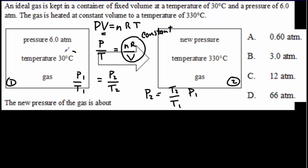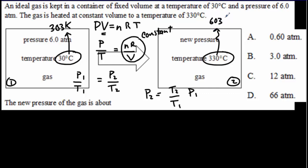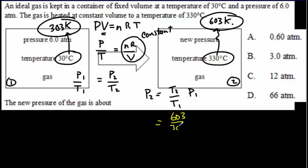We have to be careful here. In Celsius the temperature went up by a factor of 11, from 30 to 330, but in Kelvin it didn't go up by nearly that factor, so we've got to convert to Kelvin. 30 degrees Celsius is 303 Kelvin, and 330 Celsius is 603 Kelvin — so in Kelvin we basically just doubled the temperature, meaning we get double the pressure. Plugging in, 603 divided by 303 times 6 atmospheres gives us 12 atmospheres. The correct answer is C.